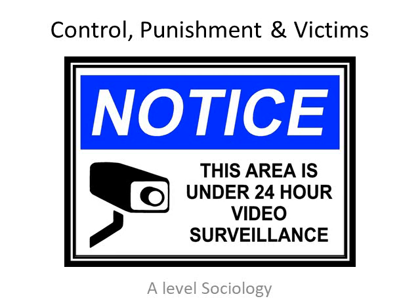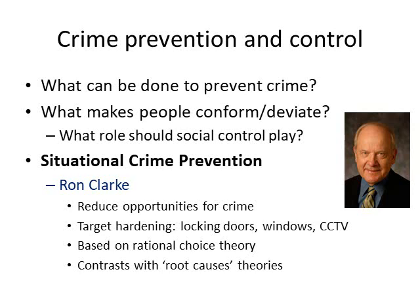Hello and welcome to this video on control, punishment, and victims. When it comes to crime prevention and control, sociologists ask themselves: what can be done to prevent crime, or if indeed anything can be done? What makes people conform to the law and to the norms of society, but also what makes them deviate, and what role should social control play? What role indeed should the state play? There are three main different approaches to crime prevention and control.